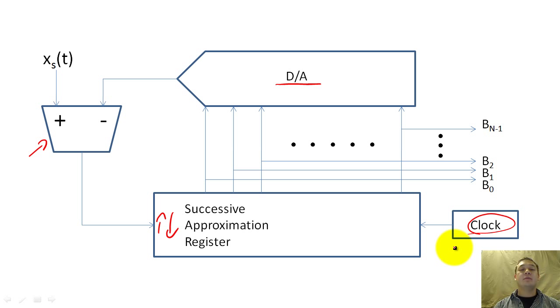The up-down counter maintains our current approximation of the input voltage. We compare this approximation with the input voltage by converting the approximation back into a voltage using the D to A converter.